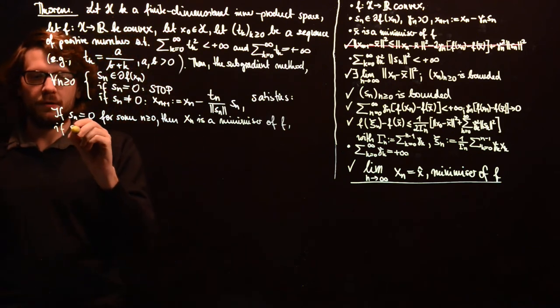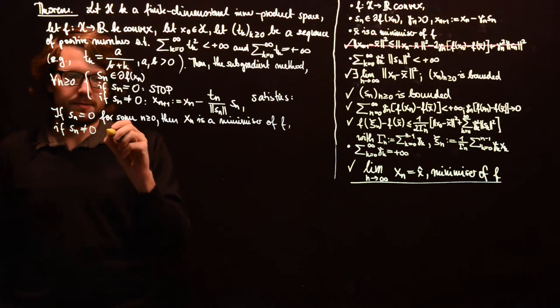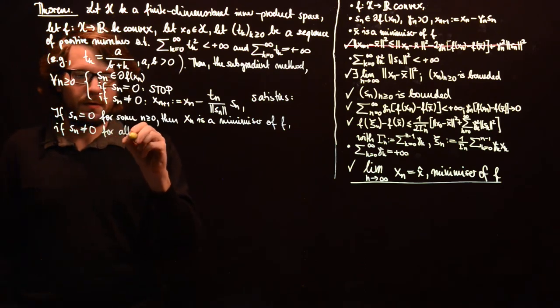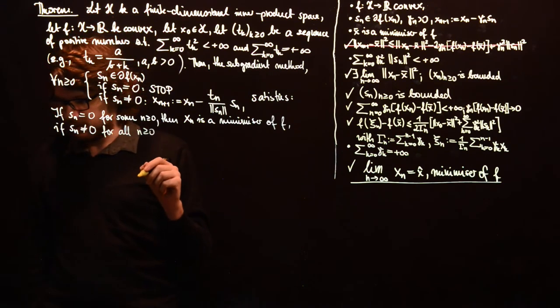And if only the second case happens, so if s_n is not equal to 0 for all n greater than 0.